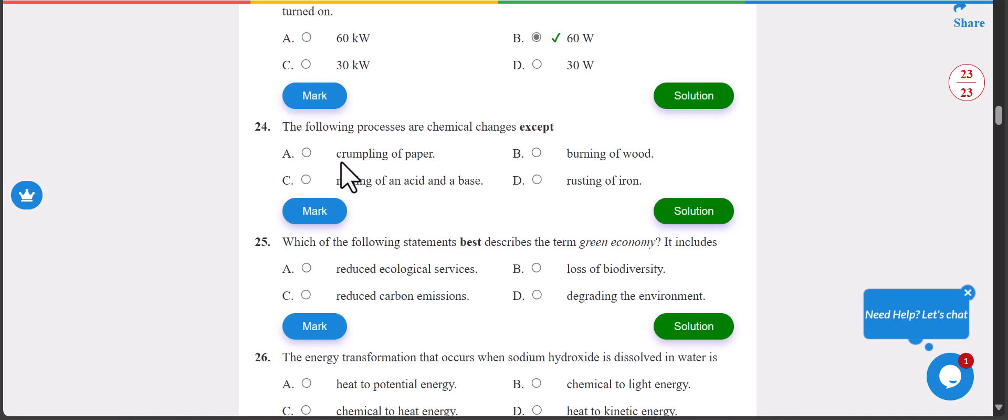Number 24: the following processes are chemical changes except what? Except A, which is crumpling of paper. Now let's go to 25: which of the following statement best describes the term green economy? It includes C, reduce carbon emission.